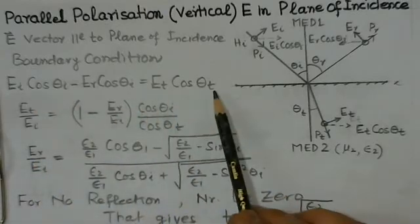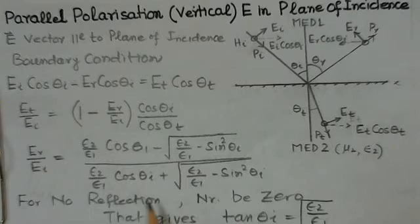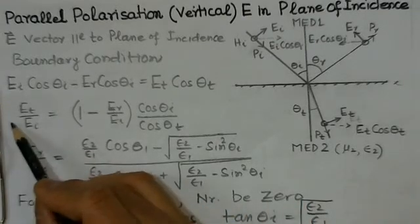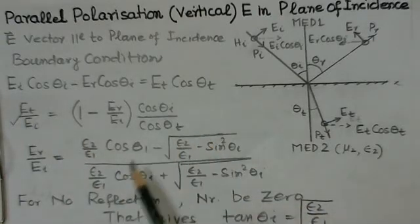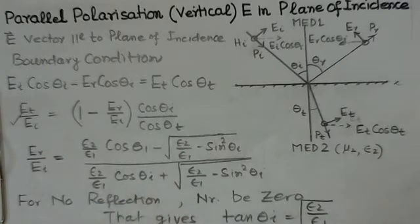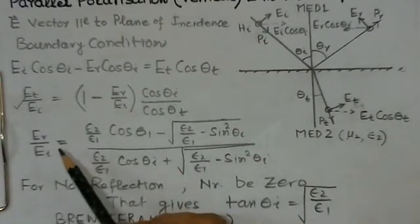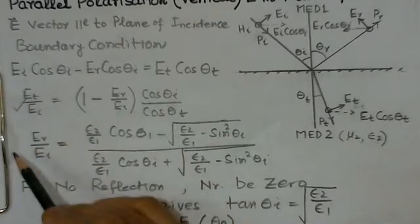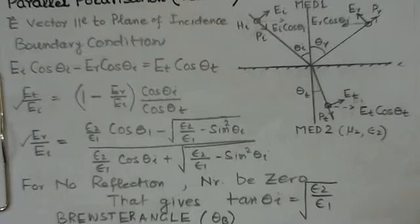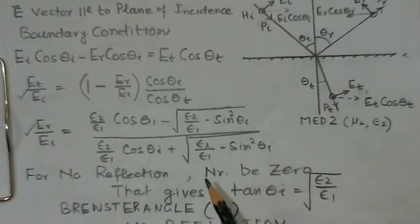Solving this relation, we get the value for E_T over E_I, and using the general relation of relating reflection and transmission coefficients, which we have seen earlier, we can get a relation for E_R over E_I. This is the transmission coefficient and this is the reflection coefficient. We have determined both reflection and transmission coefficients, and these are very well documented in any book on electromagnetics.